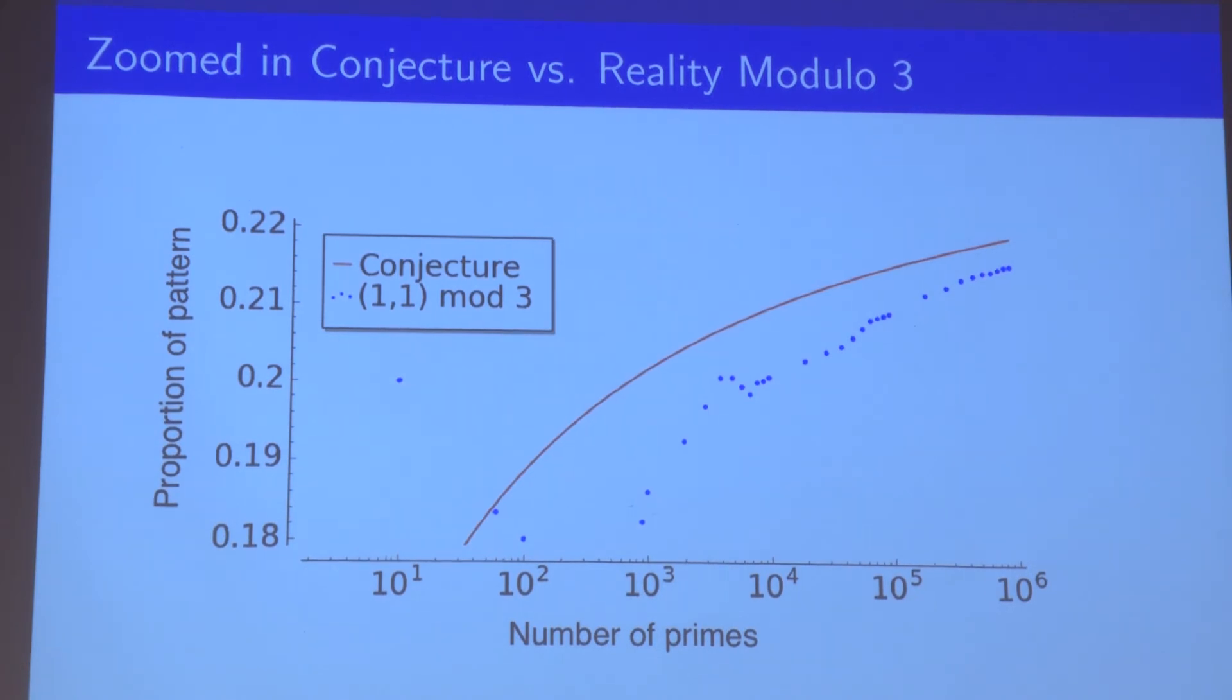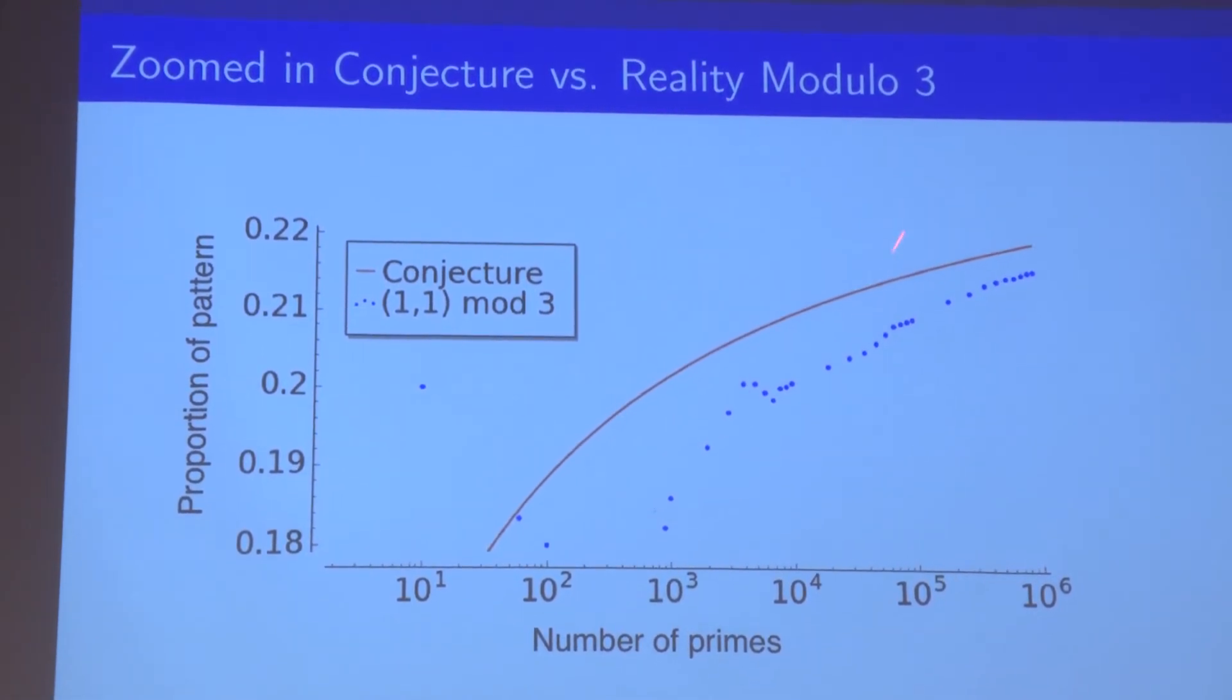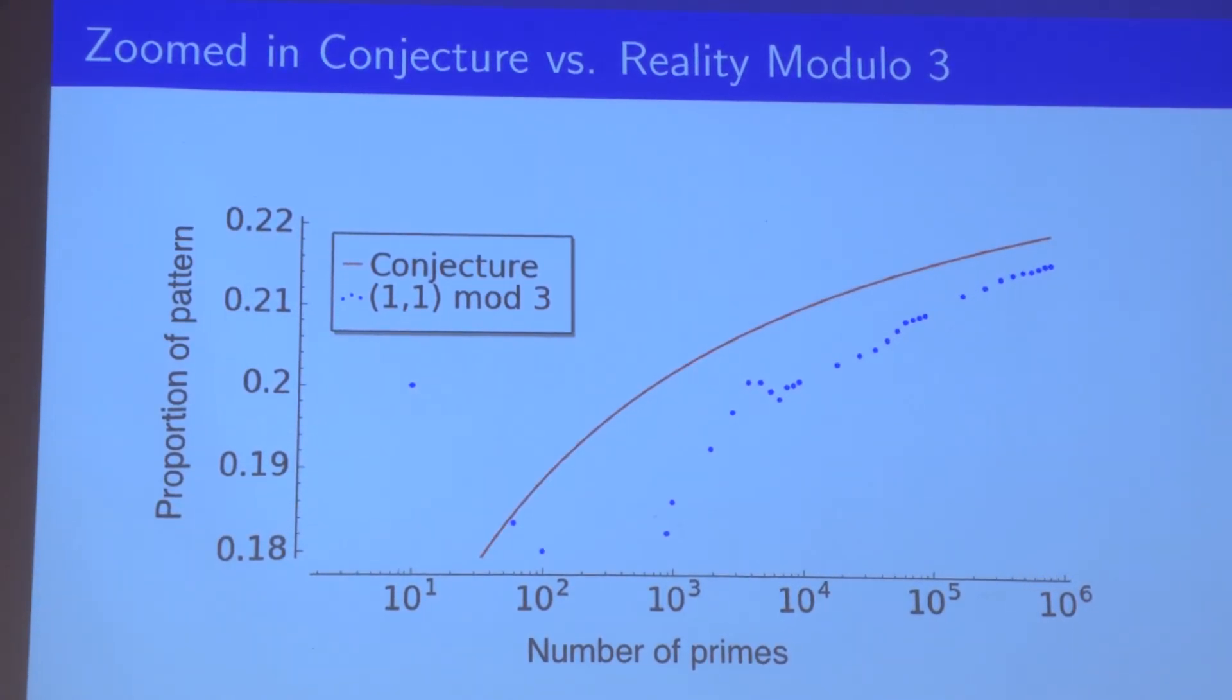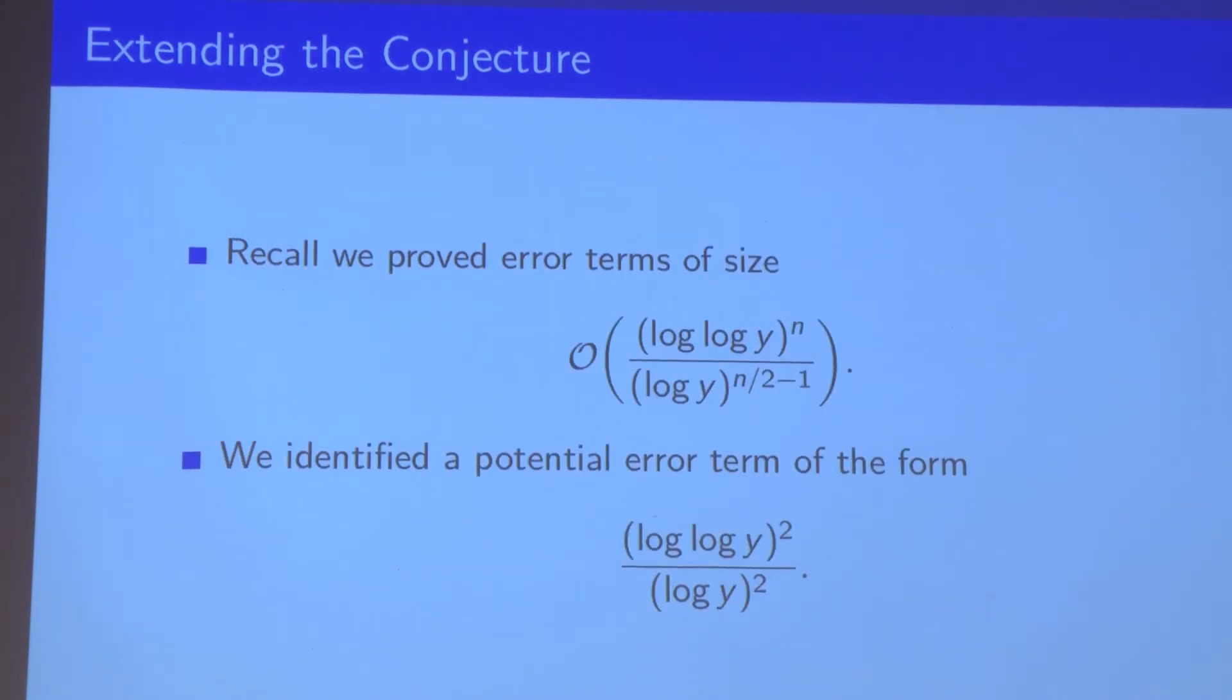These deviations actually look like there could be another term that is missing from the conjecture that was not accounted for. So what we did was we tried to identify this new term. We curve fitted with our extended data, and we found that the best fit was a term of this form: (log log y)^2 / (log y)^2.